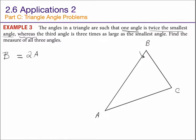Whereas, it just means and or but. The third angle, that has to be our C, the third angle is three times as large as the smallest angle. So, we're still talking about the A being the smallest angle. C is three times as large as the smallest angle.